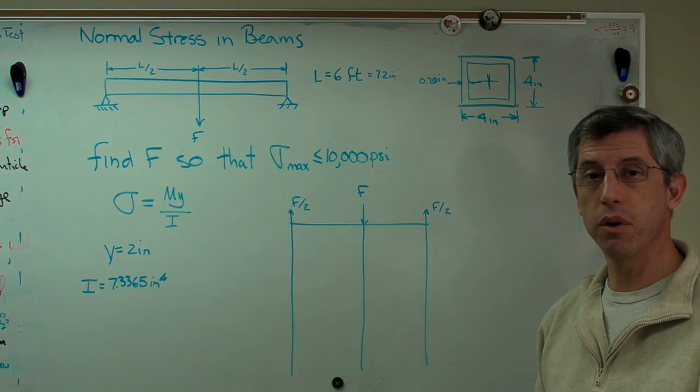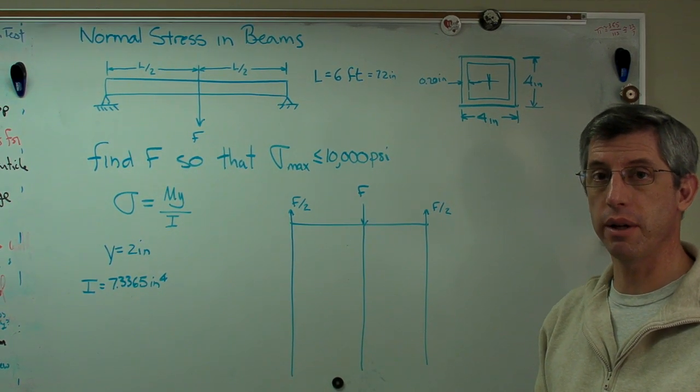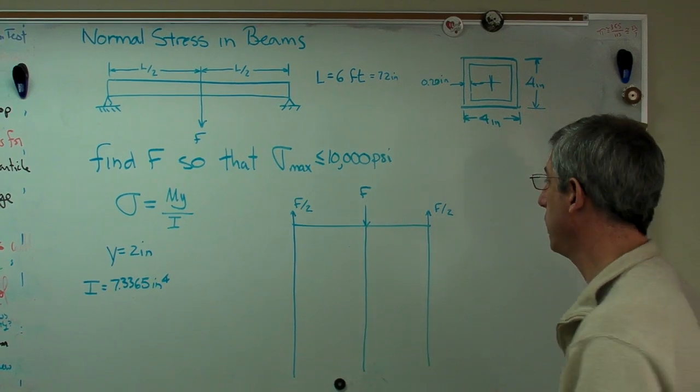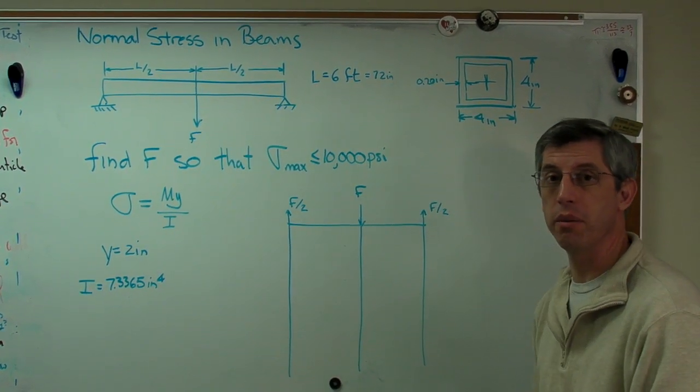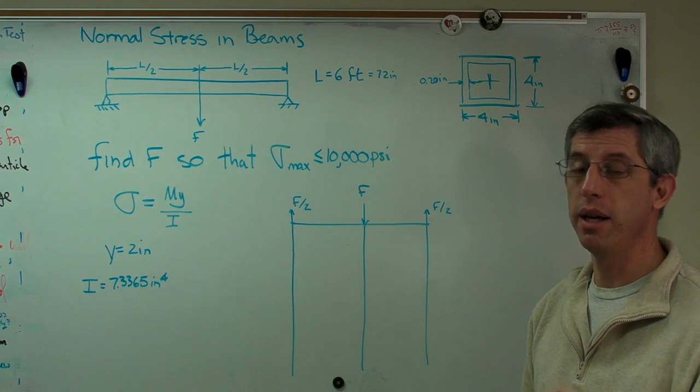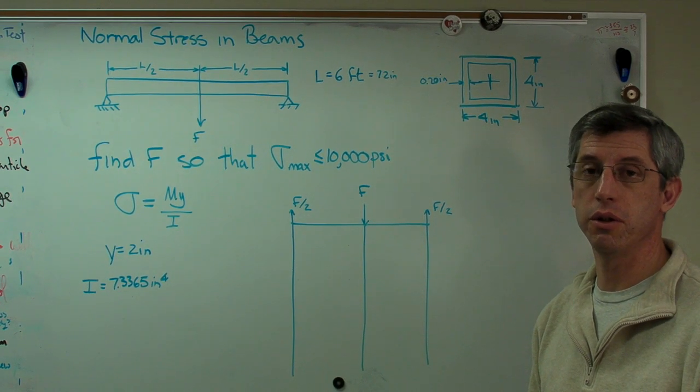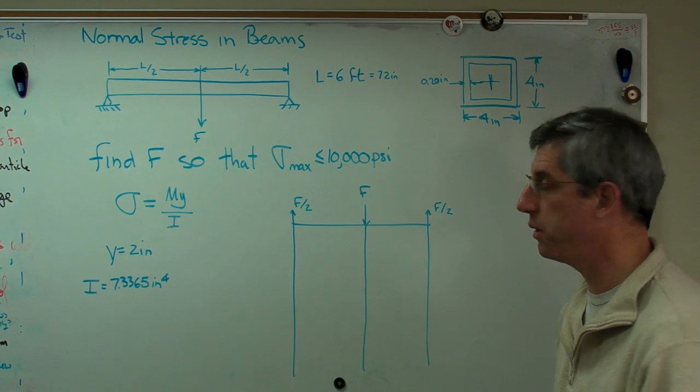It's a length of 6 feet or 72 inches. So because it's symmetric, it's easy to see that this is F over 2 on both sides. Now, if you don't want to take my word for it, if you want to do the equilibrium analysis, absolutely go ahead and do that. This is one of those times. This is so simple, I omitted the equilibrium analysis. But if you want to learn the process and use the process every time, that's just fine.